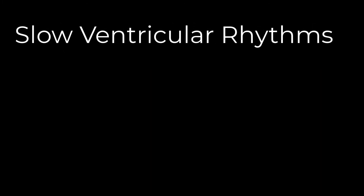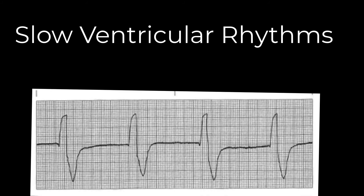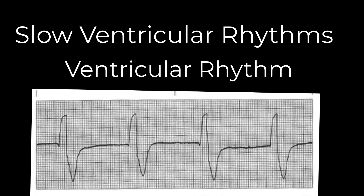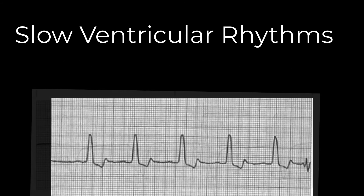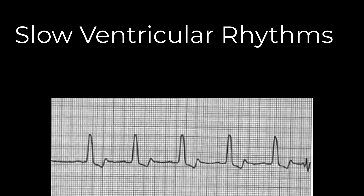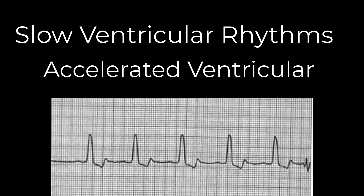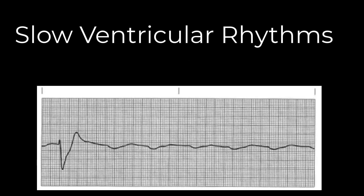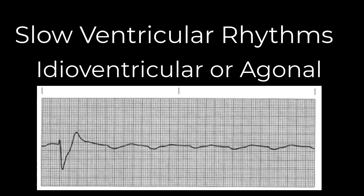The other ventricular rhythms you should be familiar with are all indicative of serious cardiac dysfunction, and are most likely seen in a patient in cardiac arrest. If you remember that the intrinsic firing rate of ventricular cells is about 15 to 40, then a rhythm at that rate with wide and ugly QRS complexes would simply be labeled a ventricular rhythm. If that ventricular rhythm is faster than expected but less than 100, we call it an accelerated ventricular rhythm. And if it is originating in the ventricles and is even slower than the intrinsic rate, we call it an idioventricular rhythm or an agonal rhythm.